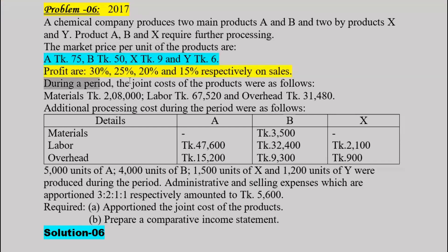During the period, the joint cost of the products is as follows: materials approximately 67,500, labor sixty-seven thousand five hundred, and overhead thirty-one thousand four hundred eighty.